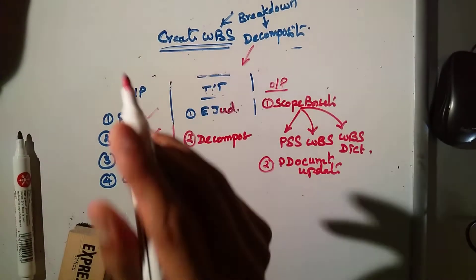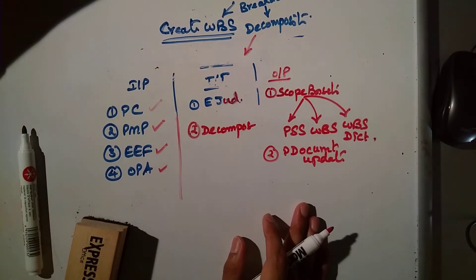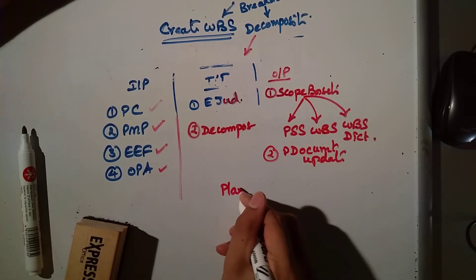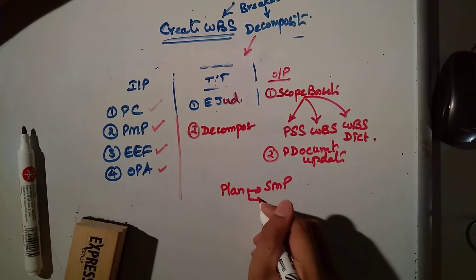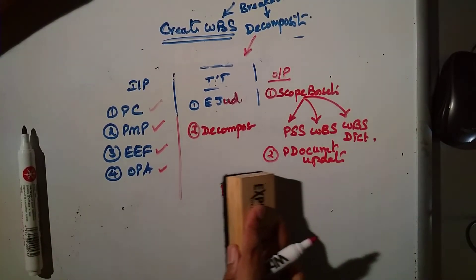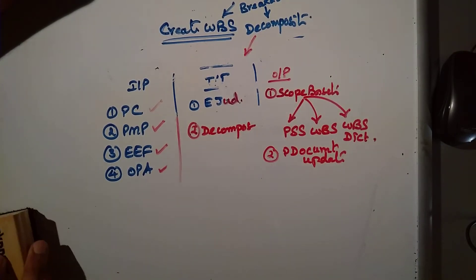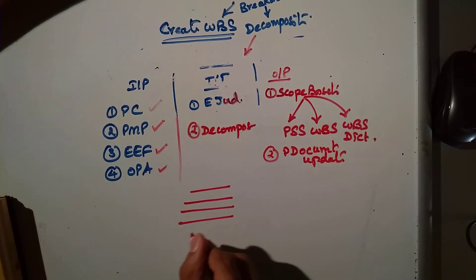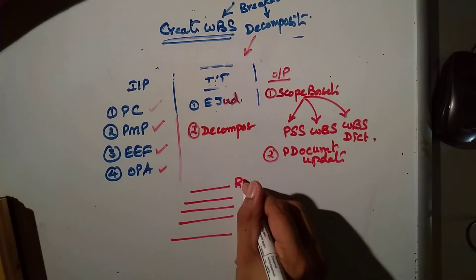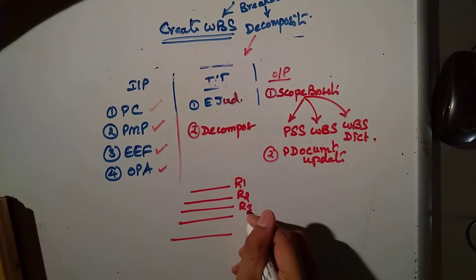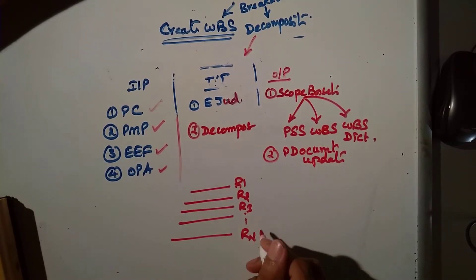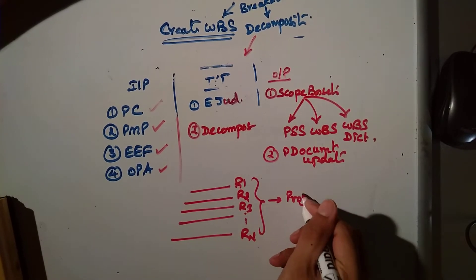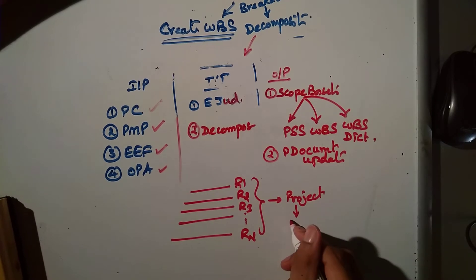Let me give you the sequence — it's very easy. First we did Plan Scope Management, with the scope management plan and requirement management plan as main outputs. Then with the customer representative and sponsor we started collecting requirements and got a list of requirements. All of those requirements together — I can call that my total project, or total scope — the total work to be done.